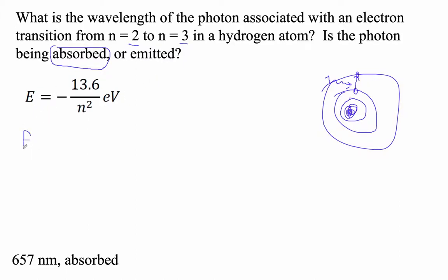So the energy of the second orbital is minus 13.6 eV over two squared. Minus 13.6 divided by two squared is minus 3.4. I don't think I'd memorize this.